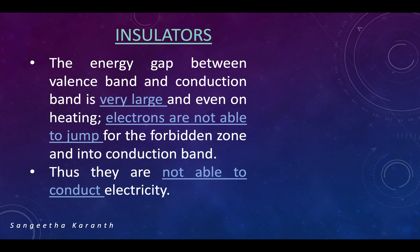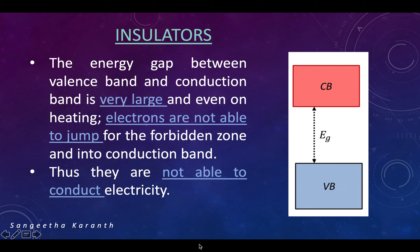Next, coming on to insulators. The gap between the valence band and the conduction band is very high. So much energy is required for the electrons to move from the valence band to the conduction band. A very large amount of energy is required, so the movement of electrons is effectively forbidden, and because of this these materials are not able to conduct electricity.